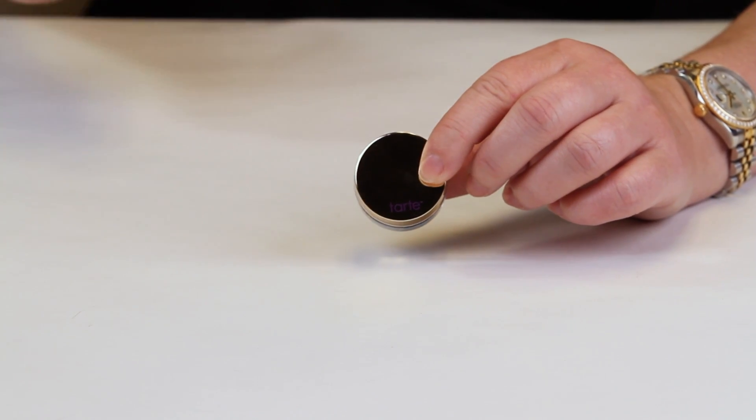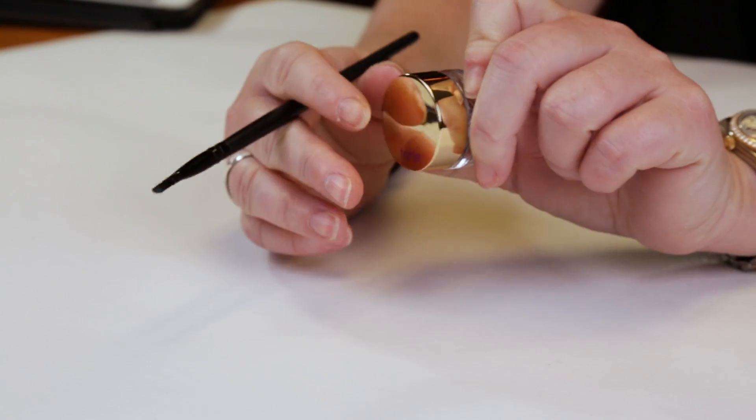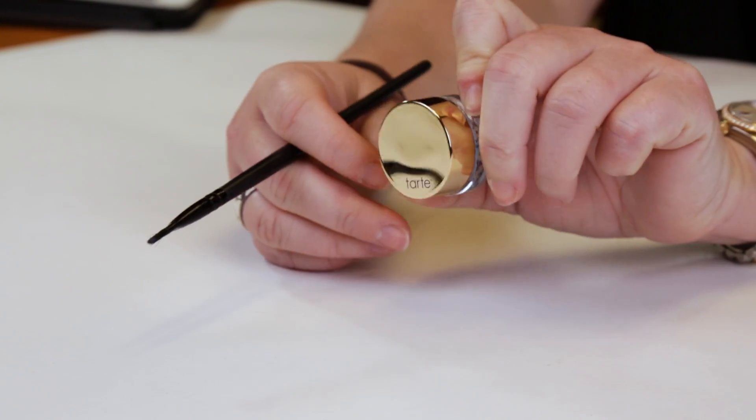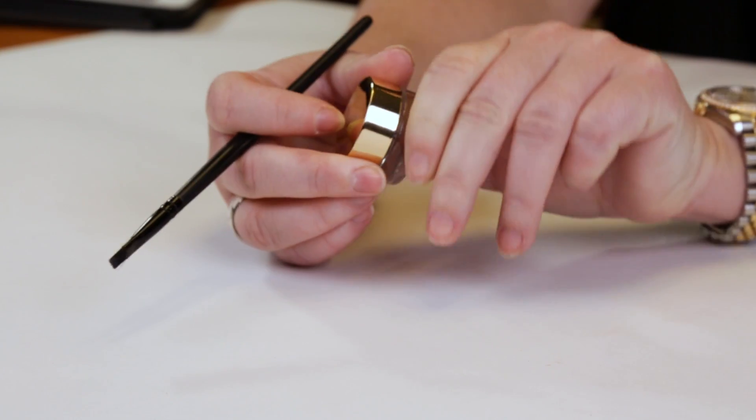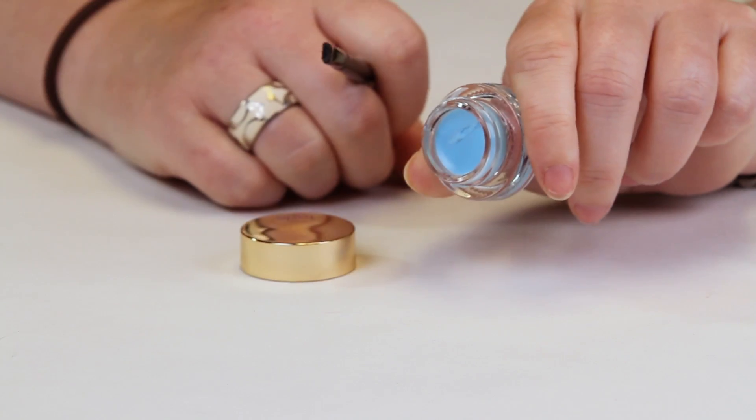This sells for $21, and the color I have is Unicorn Kisses. They came out with several bright, fun make-believe-in-yourself colors, but it's the exact same formula as their standard waterproof liner.